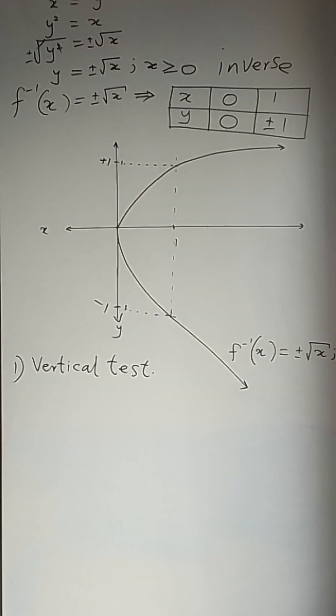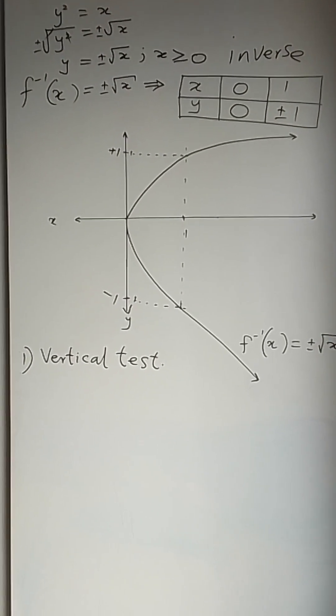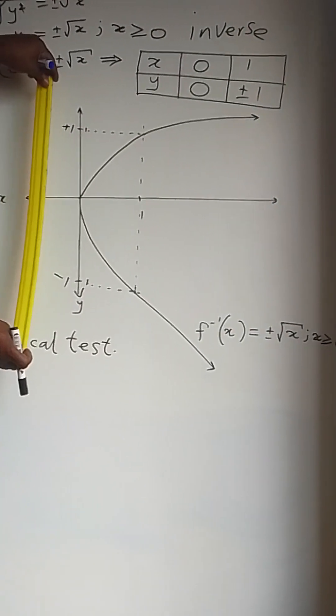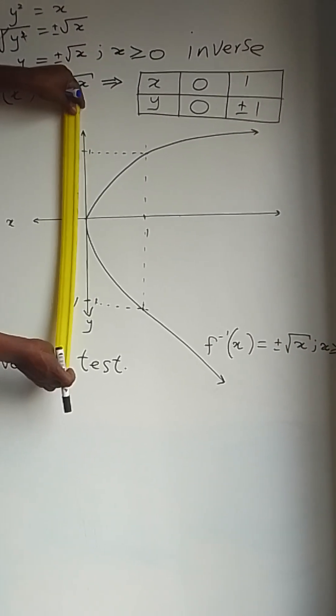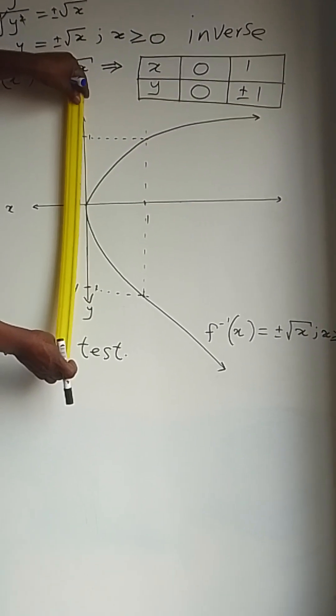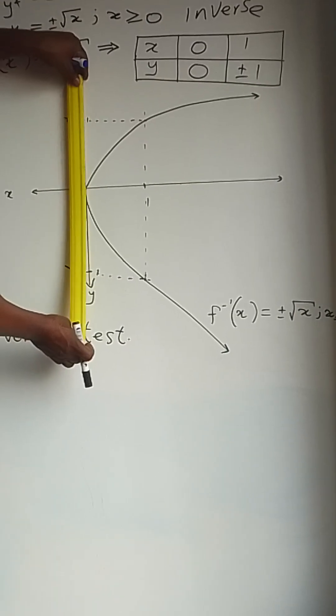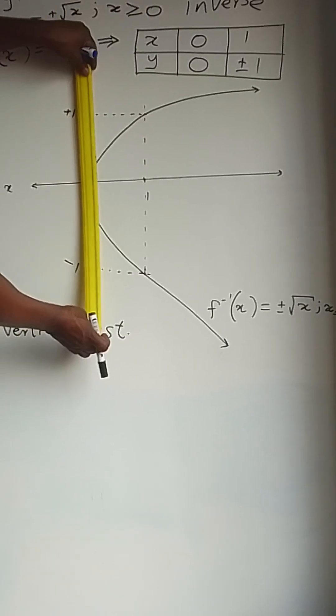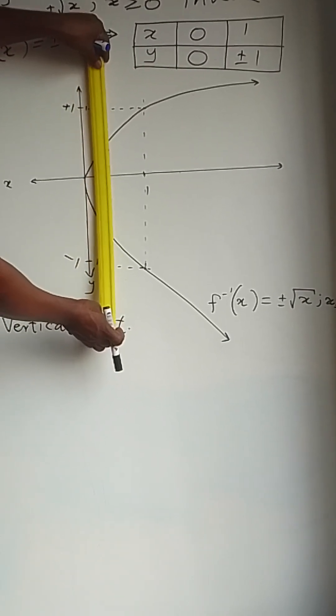When we perform a vertical test, this is what is going to happen. We put your ruler here, you place it and move it from left to right. Here you can see that as we move along, the graph is cut into two values.